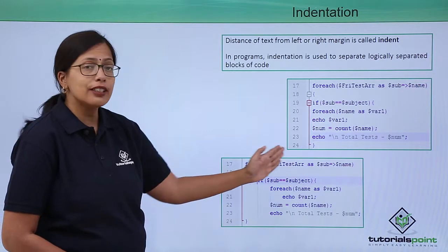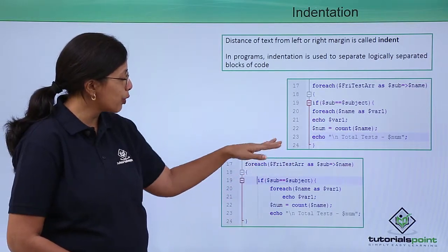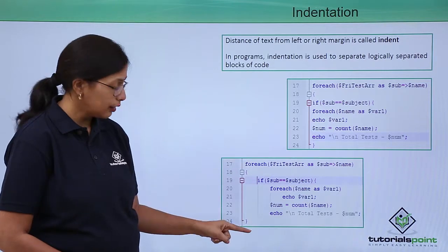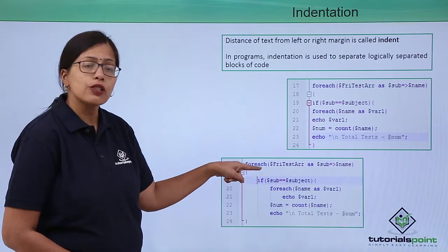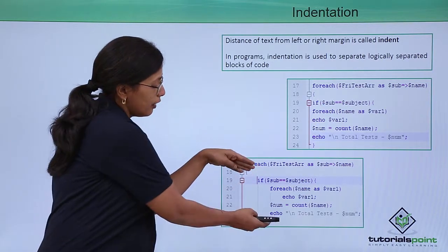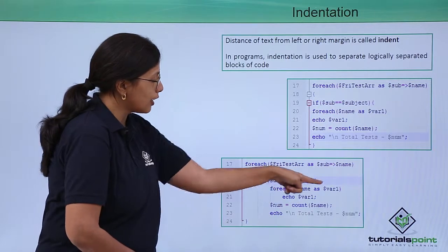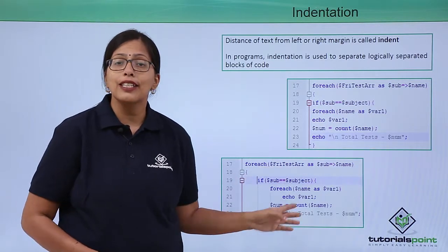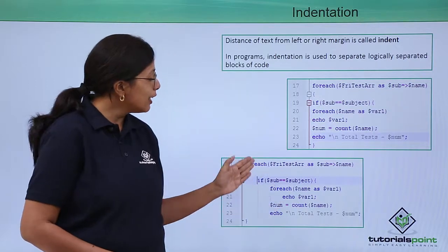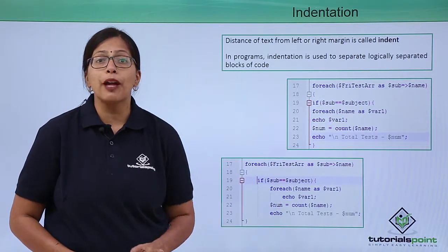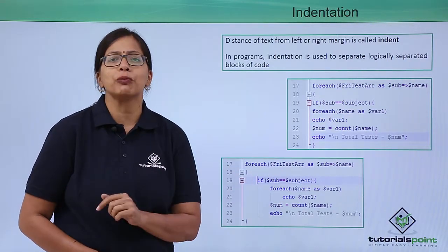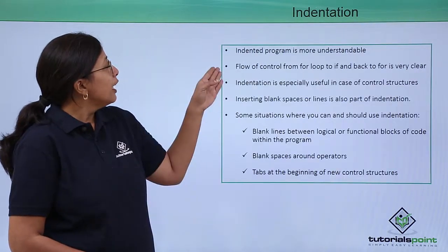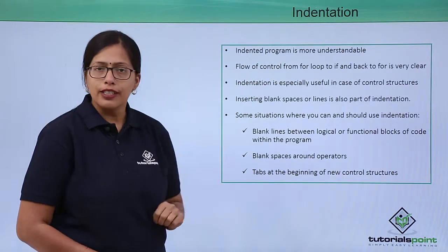You can read this and understand that this program segment is starting here and ending here. This control structure is starting here and ending here. This one has just one statement. It makes reading and understanding of the program very easy — an indented program is more understandable.